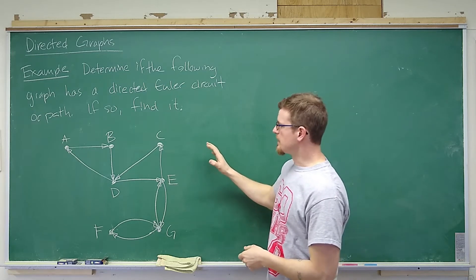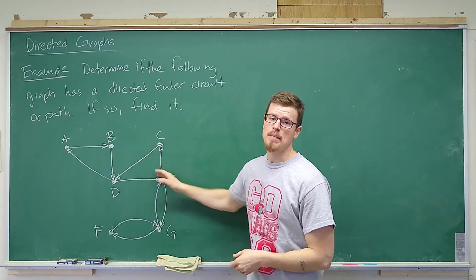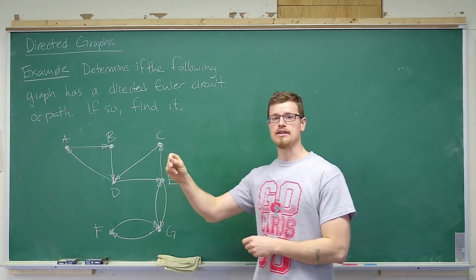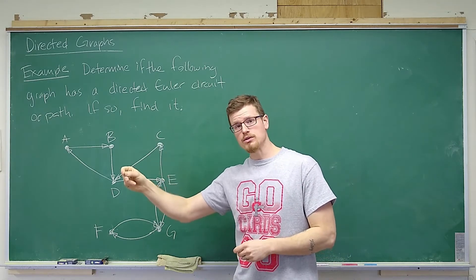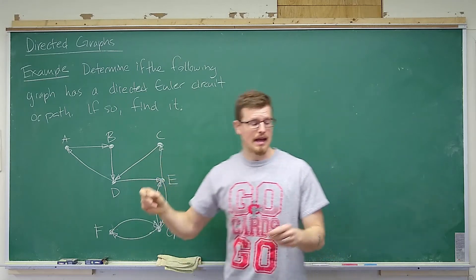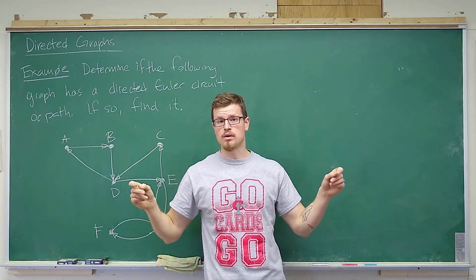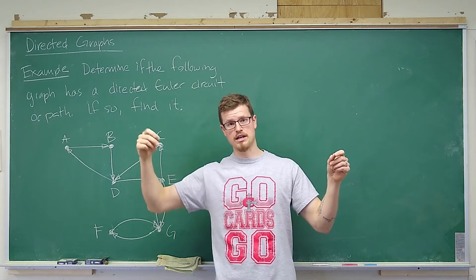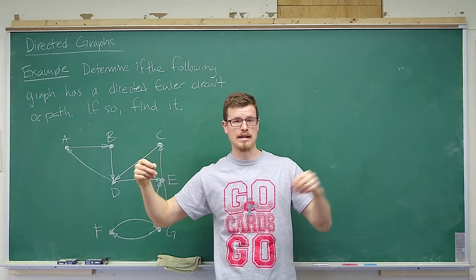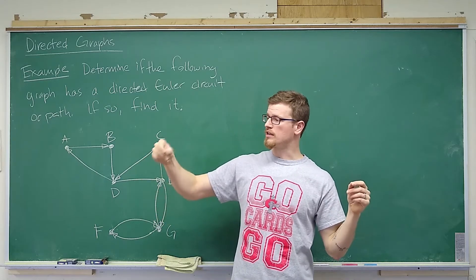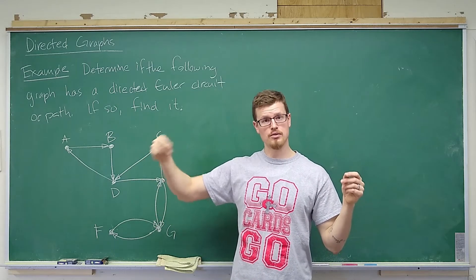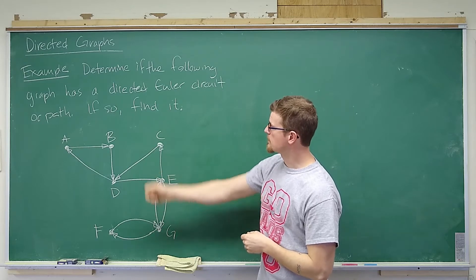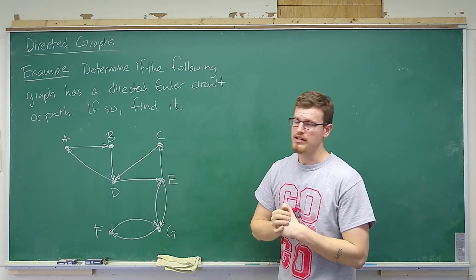If the in-degree and out-degree matches everywhere except at two vertices, where one of those vertices has the degree out one higher, and on the other one the degree in is one higher, then we would be able to create a path. If we can add an edge to make an Euler circuit exist, then certainly an Euler path will exist as well.